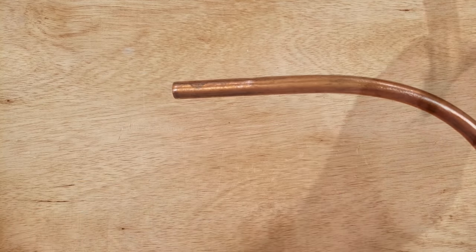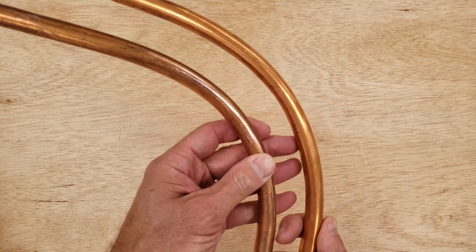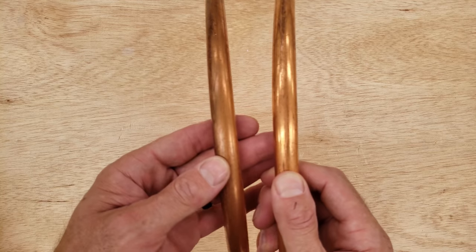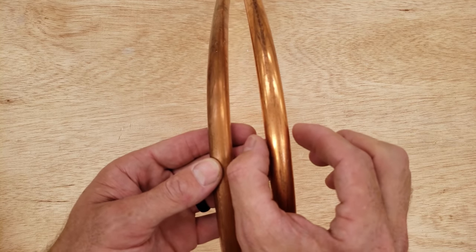Here's the difference between these two pipes. This one was the hand bent one, and this one was the spring bent. You see the hand bent is a little wider, but there's no kinks, that's not a problem.